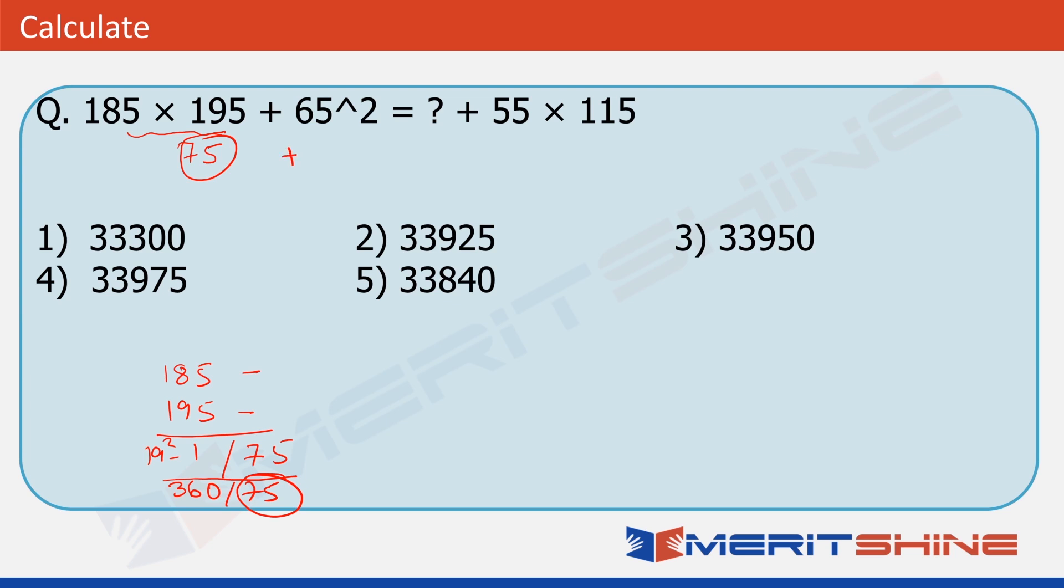Again, for 65 square, we know it has to end in 25. Again, if you have seen the tutorial of finding the squares of numbers ending in 5, you will know that 65 square has to end in 25. And then multiply this 6 with number 1 more than itself. So, it is 6 into 7, 42. Again, we are bothered only about the last two digits.